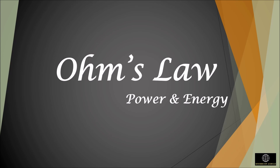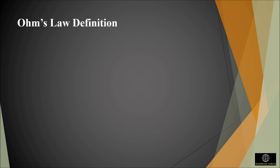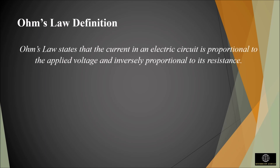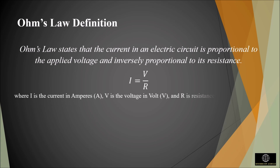In this video, let us discuss Ohm's law, which scientifically defines how voltage, current, and resistance in a circuit are related. Ohm's law states that the current in an electric circuit is proportional to the applied voltage and inversely proportional to its resistance. That is, I is equal to V by R, where I is the current in ampere, V is the voltage in volt, and R is the resistance in ohms.